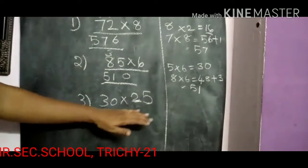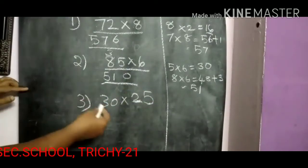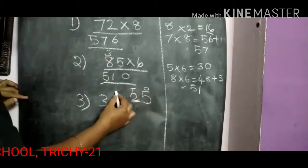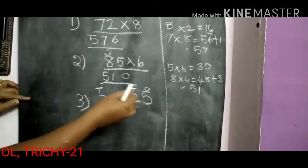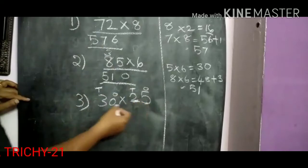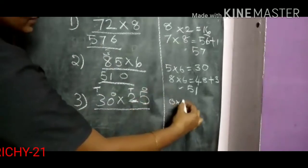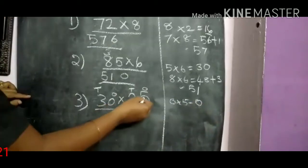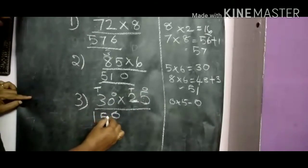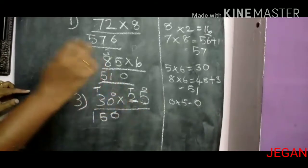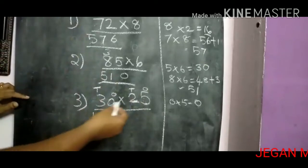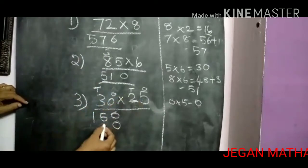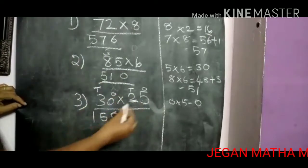Ok, now 2 digit number multiple with the 2 digit number. First: 30 multiple with 25. There is 1's place and 10's place. First start from 1's place: 5 multiple 0 — any number multiple with 0 will get 0. Then 5 3's are 15. Now for 10's place number, first write 0, then 0 multiple 2 is 0, then 3 2's are 6.